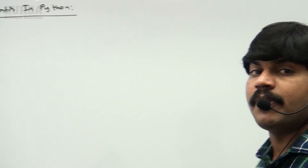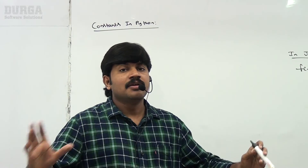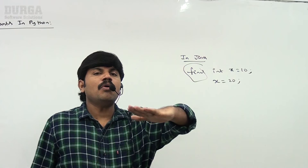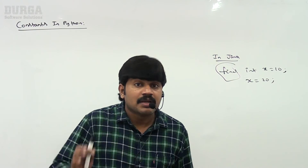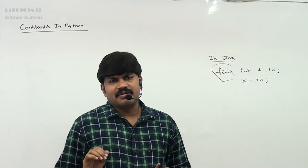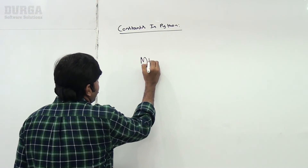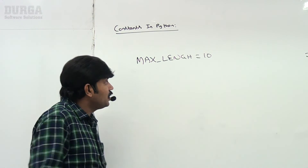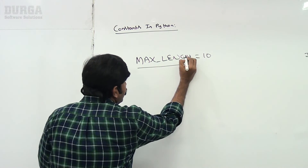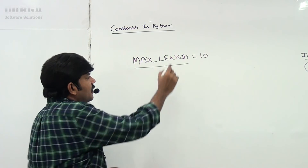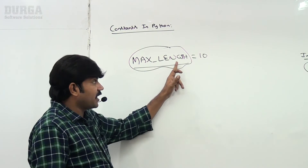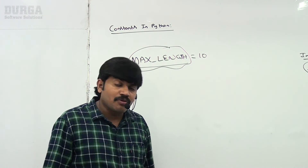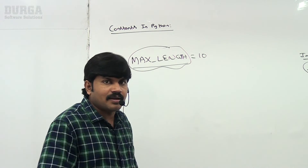How can you implement this in Python? In Python, modifiers concept is not applicable — final, static such type of keywords are not there. That's why there is no way to define constants in Python. Constants concept is not applicable in Python. But there is a convention: if you don't want to change the value, use uppercase characters like MAX_LENGTH = 10.